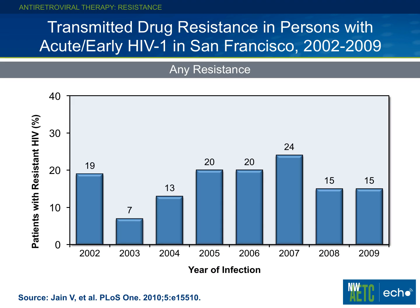There's data from San Francisco looking at individuals with acute or early HIV infection over a sustained period from 2002 to 2009. They looked at individuals that had any type of resistance, and from this graphic it's a significant amount. These individuals probably have slightly higher levels because they were detected very early in the course of their HIV infection.